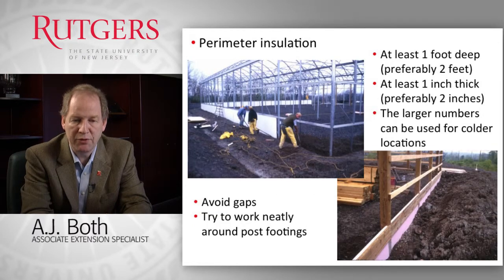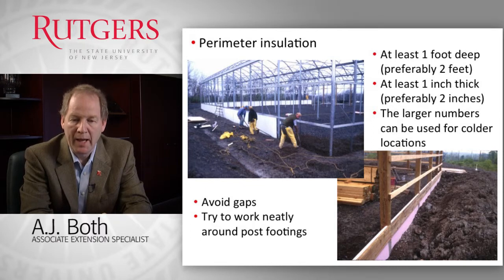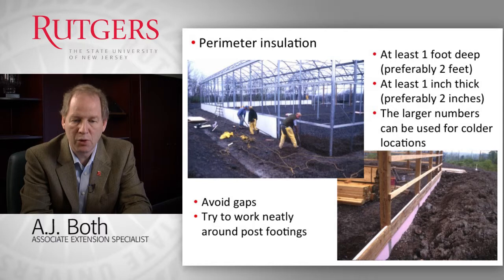Images show perimeter insulation being installed in both a greenhouse and an attached headhouse. Insulation board is dug into the ground, preferably two feet deep, with tight connections around structural components to create a good barrier against perimeter heat loss. This is straightforward when building new and more involved when retrofitting, but in either case, perimeter insulation helps reduce the heating capacity needed.